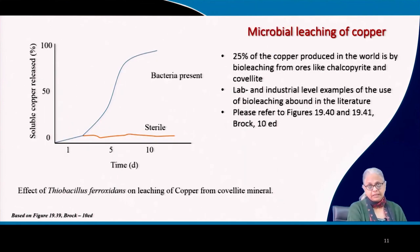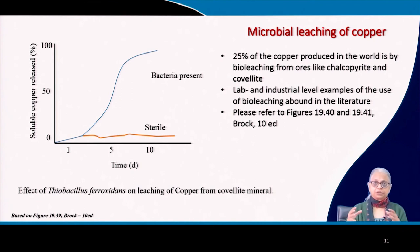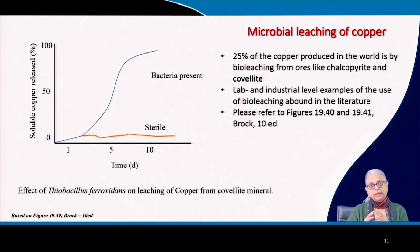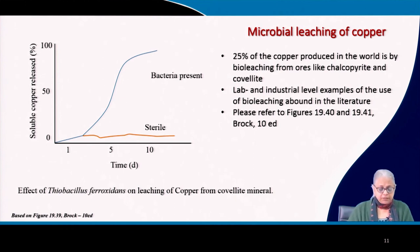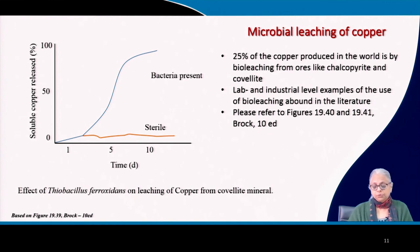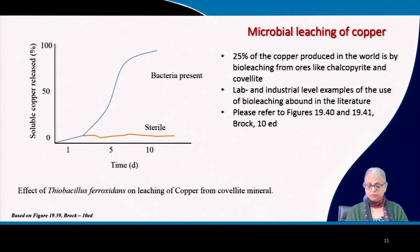Let's come to the last part of this lecture: the industrial application of how we can use bacterial reactions and chemical reactions to cycle and recover certain types of metals. Here is an example of how copper can be recovered from ore form using the same bacterium, Thiobacillus ferrooxidans, where the leaching of copper from the mineral covellite has been shown. When this particular bacterium was added to a solution containing this mineral, you can see the amount of soluble copper released compared to the sterile form. The mineral without any bacteria will not release copper in soluble form.